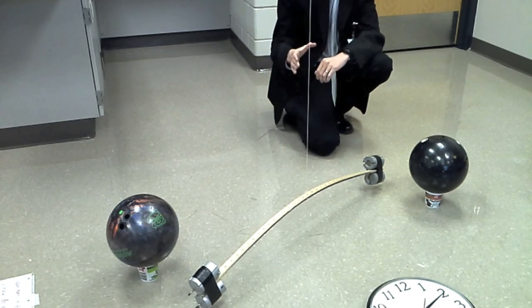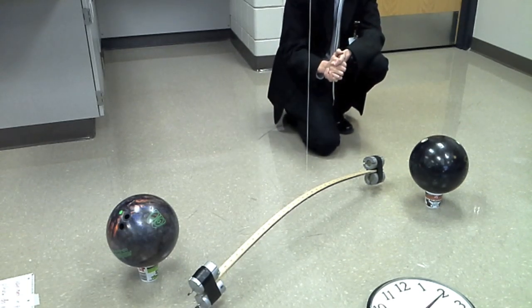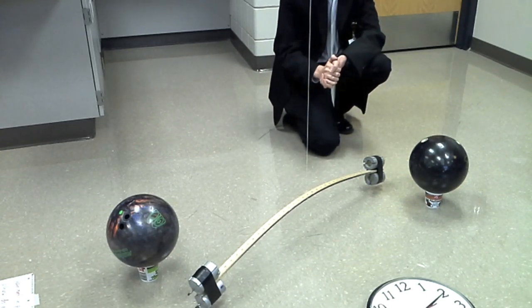So again, this is a really nice example of the force from gravity between two very small objects. So that's a good replication of the Cavendish experiment.